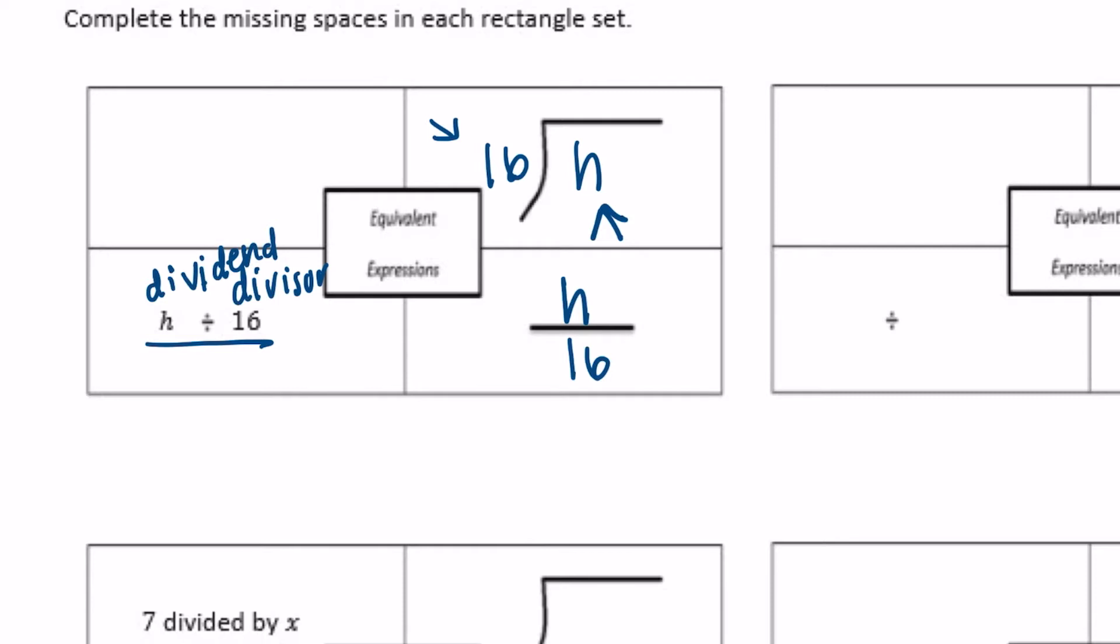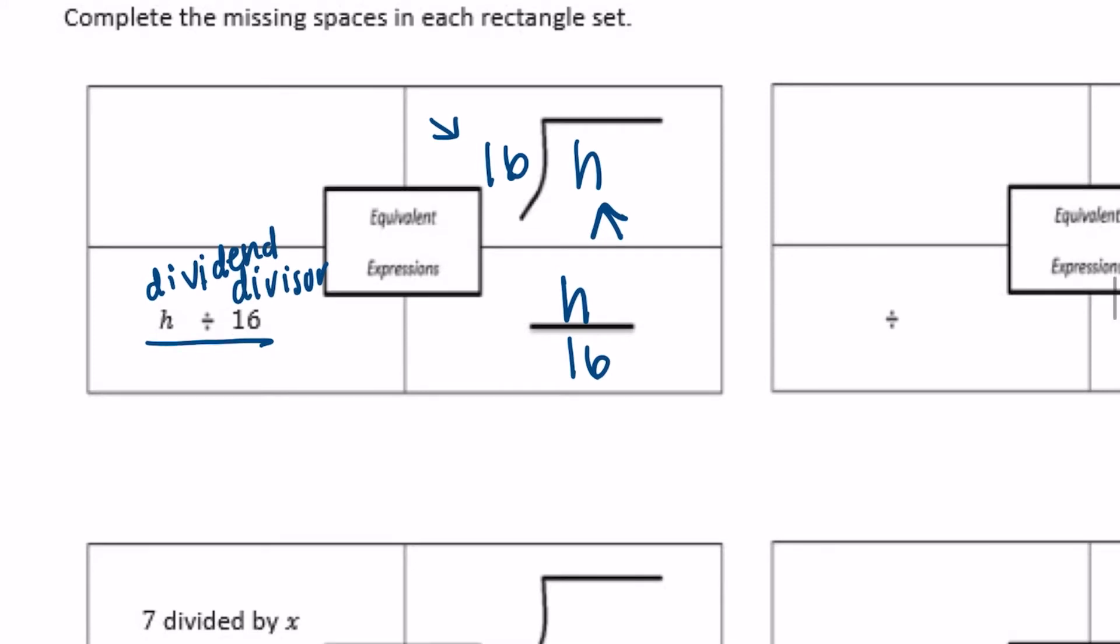And we need to write it in words. So we could say the quotient of h and 16, or you could say h divided by 16.